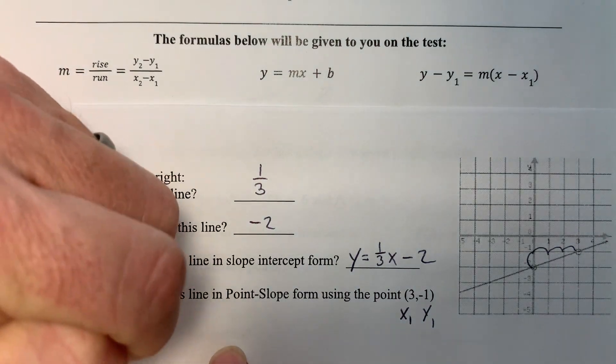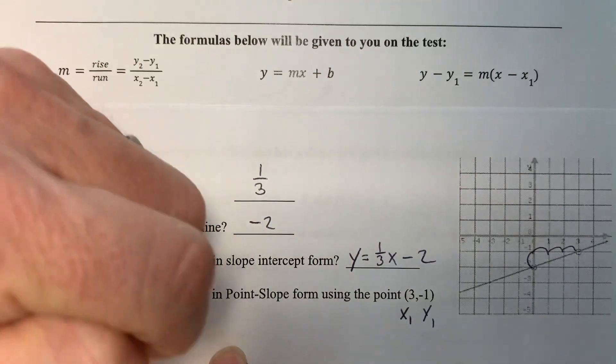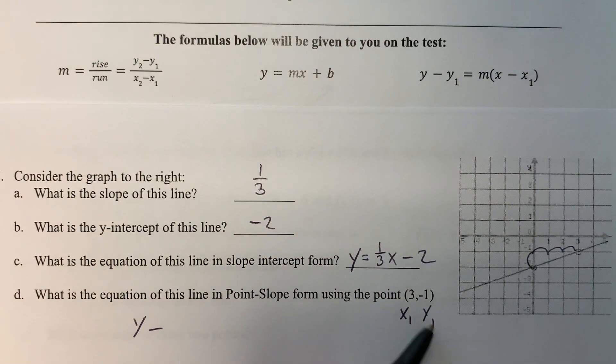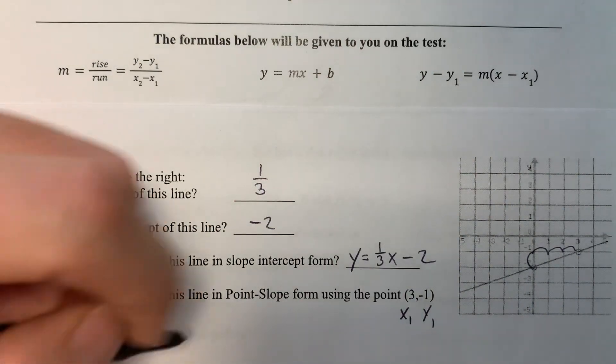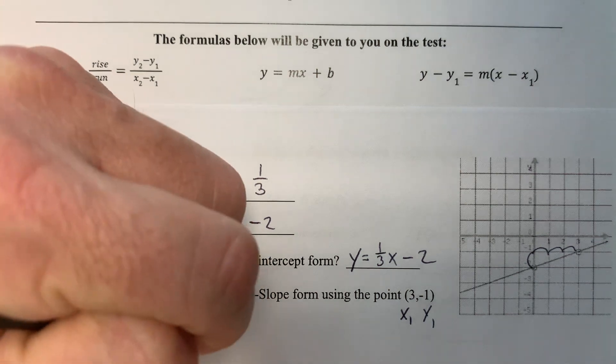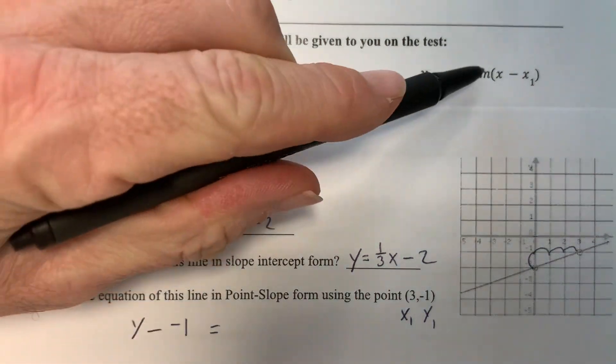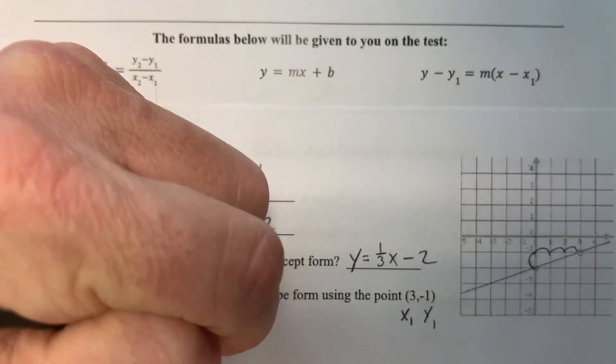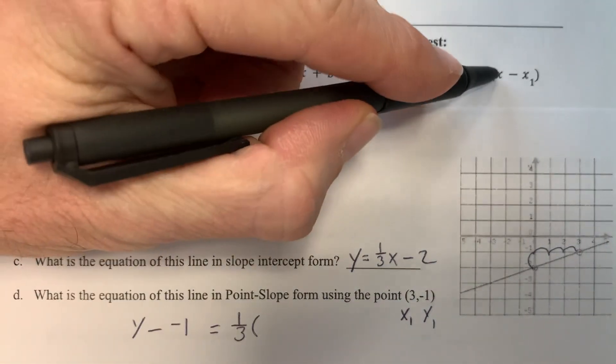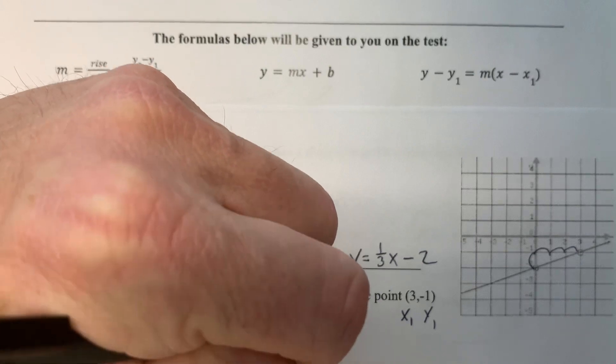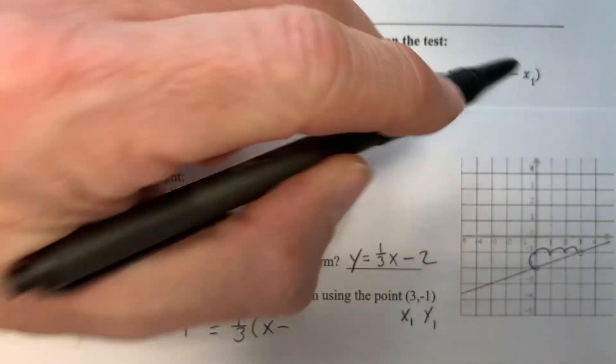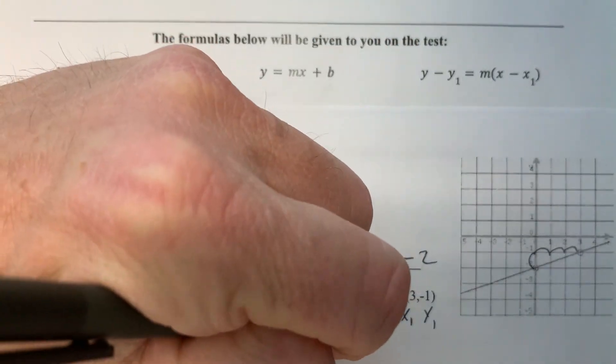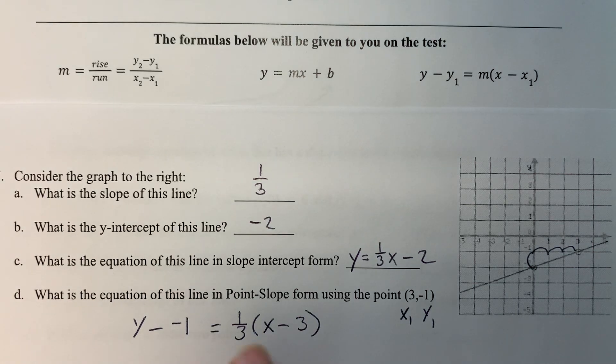So y minus y₁—that's negative one—equals m, so our slope, which is still one-third, parentheses x minus, and then finally our x₁ value is three. So there we have it. Is there anything we could clean up and make look a little nicer here? Yes, we could. Let's take a moment to do that. Two minuses right